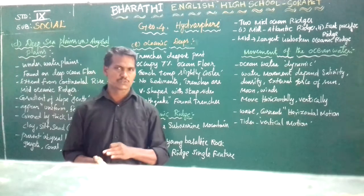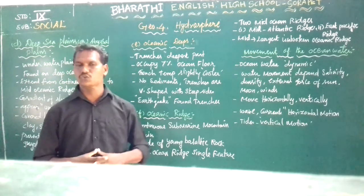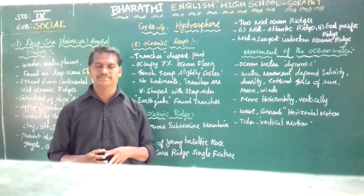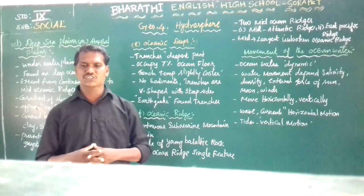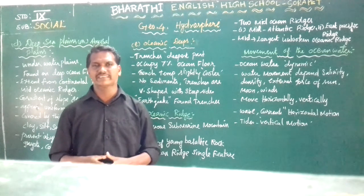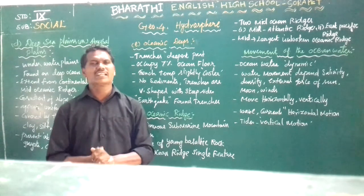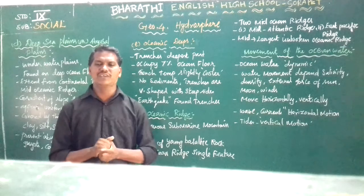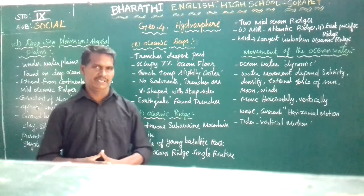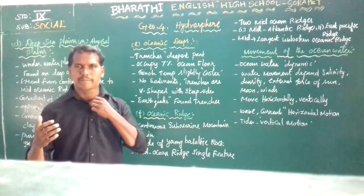Continuing from the previous discussion: the continental shelf is one of the important places for fishing grounds. The continental slope also is one of the important places — there are big canyons and trenches there. Then continental rise was also discussed, along with some of the features found in these places.